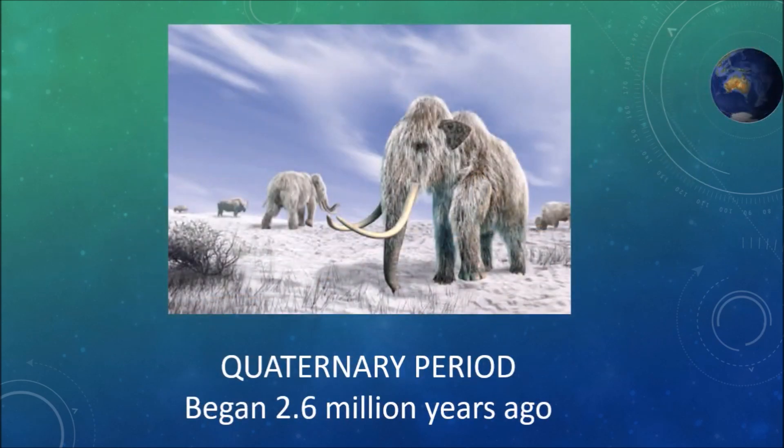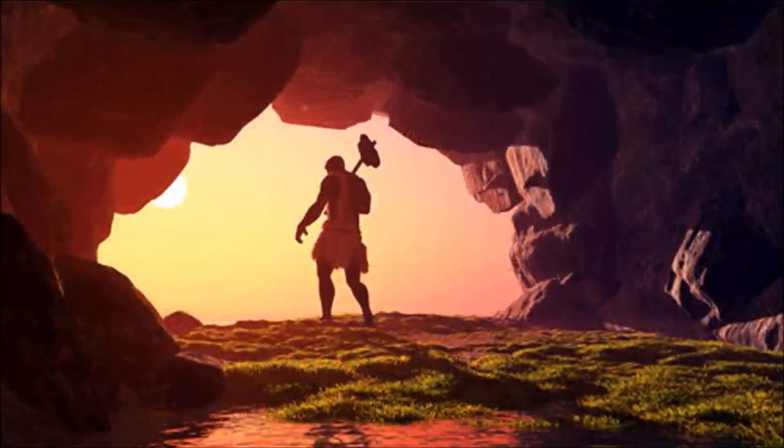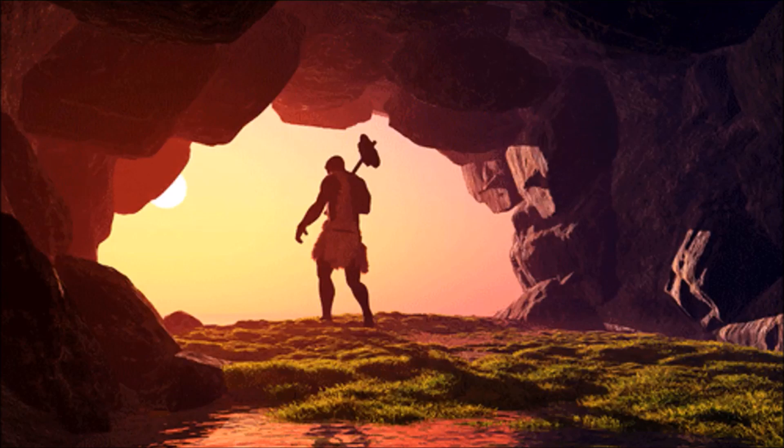We are living in the Quaternary period, which started 2.6 million years ago. This span of time is significant because it covers the evolution of humanity. Through a long cycle of ice ages, our human ancestors endured, and ultimately spread from Africa to every corner of the earth. We think the first Aboriginal Australians set foot on this land a few tens of thousands of years ago. They were joined much later by Europeans, and that is where I leave the story.